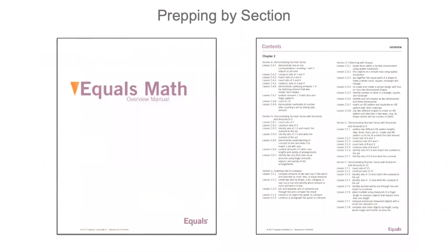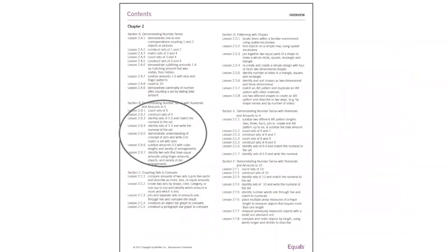The second step for lesson prep is to identify the section of lessons that you will be preparing. Looking in the overview manual in the contents pages, find the chapter, section, and lessons that align to the suggested starting point. Remember, the starting point is based on the assessment of your students' skills — done during the Equals placement assessment or using an alternative method agreed upon by your district. You will prep for the lessons following the progression of lessons laid out in the contents pages.